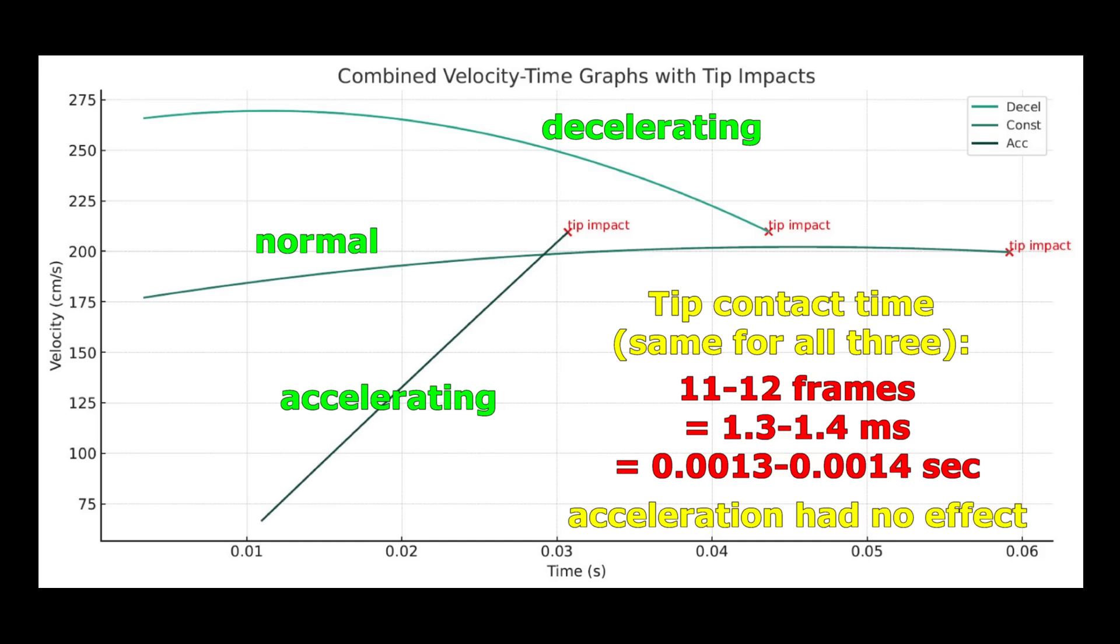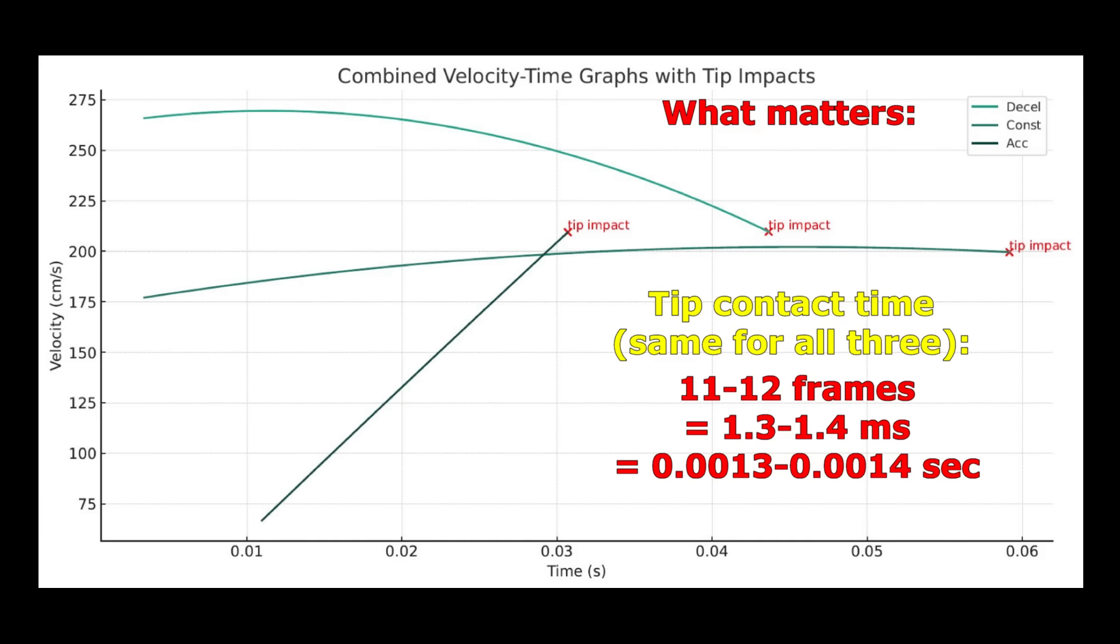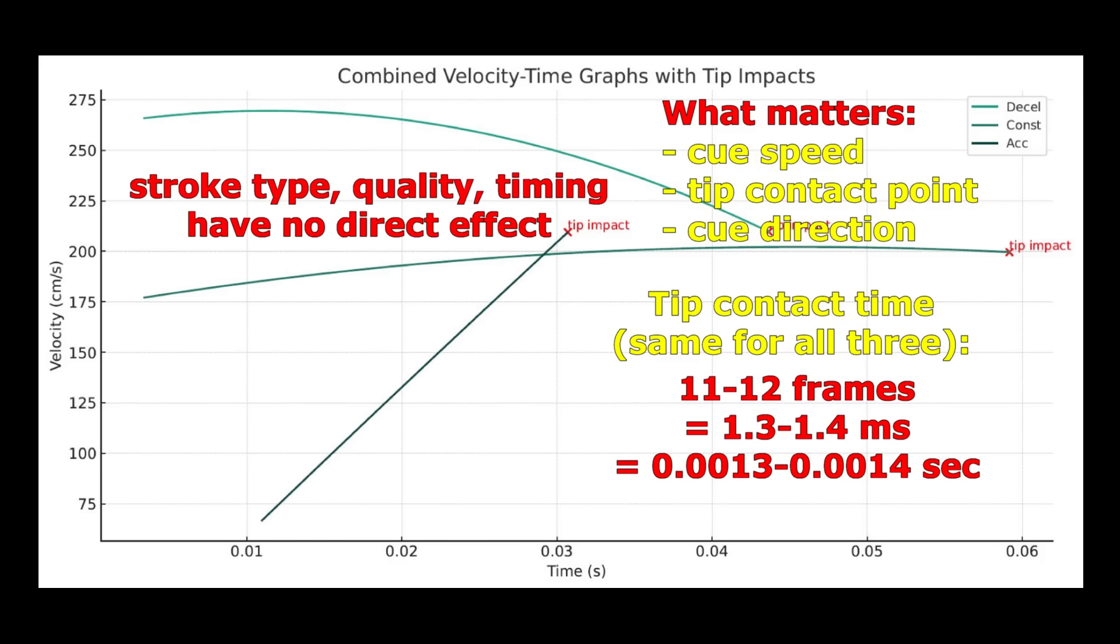How the cue speed changes before tip contact has no effect on the outcome of the shot. During the incredibly brief tip contact time, the only things that matter are the speed of the cue, the tip offset from center, and the cue direction. The type, quality, or timing of the stroke into the ball have no effect on what happens during tip contact.